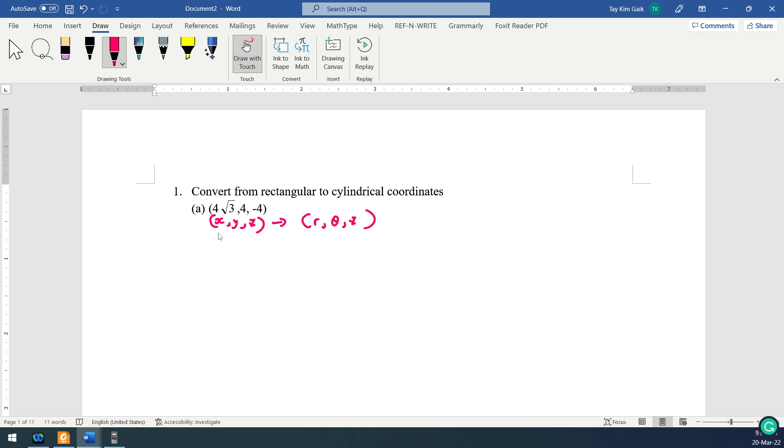So you need the r. You have the x, which is 4√3, y is 4, z is negative 4. You want to convert to r, theta, z maintained there. So basically you need to find r and theta.